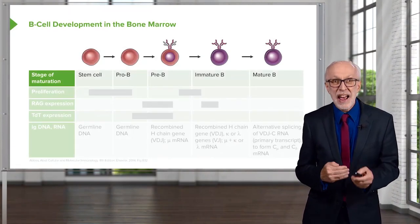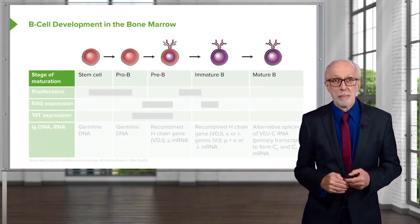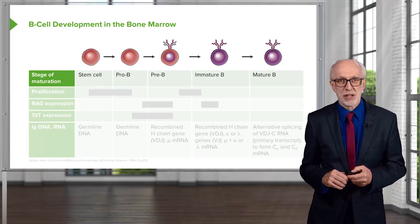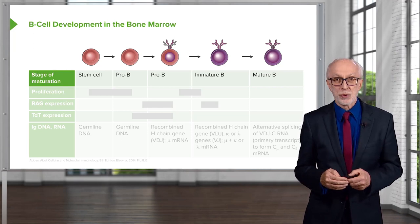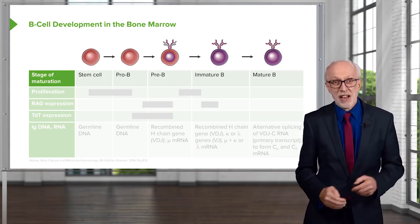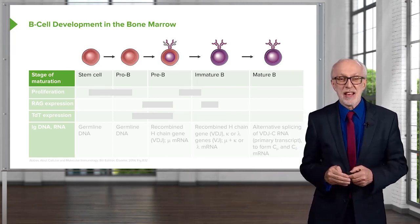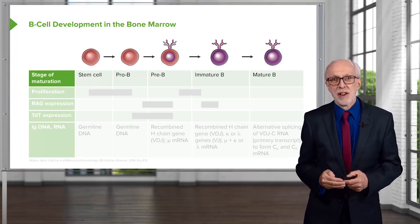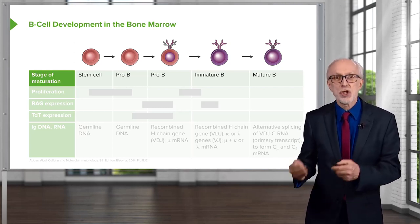Let's have a look at how B cell development in the bone marrow occurs and the stages in B cell maturation. They start off from hematopoietic stem cells, which develop into pro-B cells. Those that are going to become B cells initially become pro-B cells. The next stage is to become a pre-B cell, then they develop into immature B cells, and eventually into mature B cells.